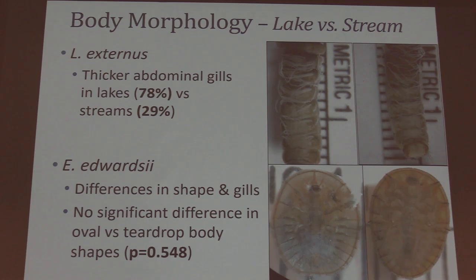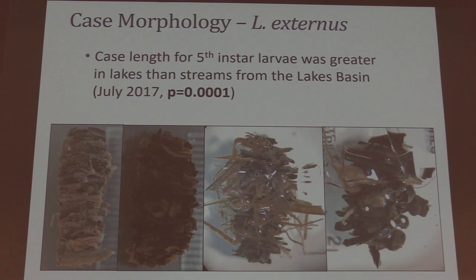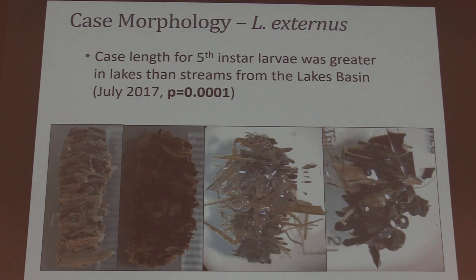For Eubriacontiborzei, the water penny beetle, I noticed differences in body shape and gills. Some individuals had an oval shape while others had more of a teardrop shape, and I wondered if there was a lake-stream difference — but I didn't find one, though that doesn't mean something interesting isn't happening. There were no significant differences in those two features. However, looking at the case morphology of Limnophilus externus, I found that case length for fifth-instar larvae was actually significantly greater in lake individuals than in stream individuals. While this species shows a lot of variation in case construction in both habitats, the lake individuals still had greater case lengths.